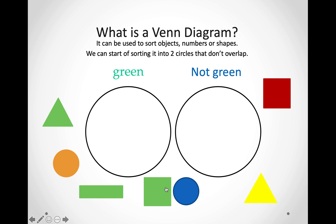Now, let us look at this example. This diagram does not overlap — that means it does not go over each other — but we can still use it to sort out our shapes. In this circle, we are going to put all the shapes that are green, and in this circle, we are going to put all the shapes that are not green.